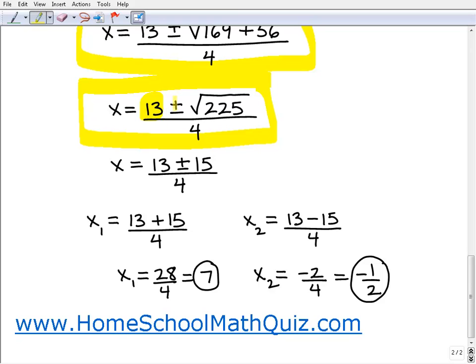It's down to 13 plus or minus the square root of 225, and the square root of 225 is plus or minus 15. So I'm left with this expression.